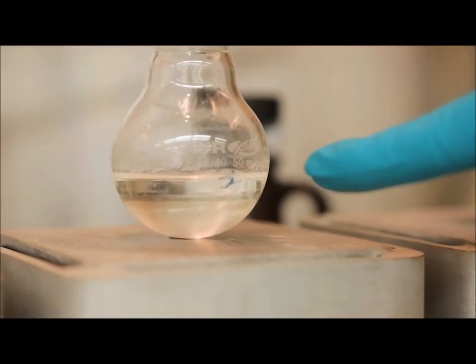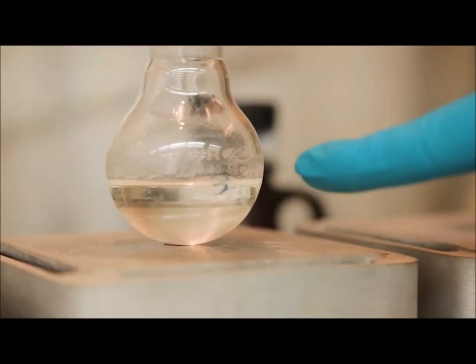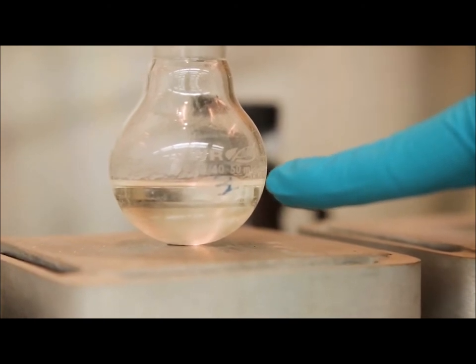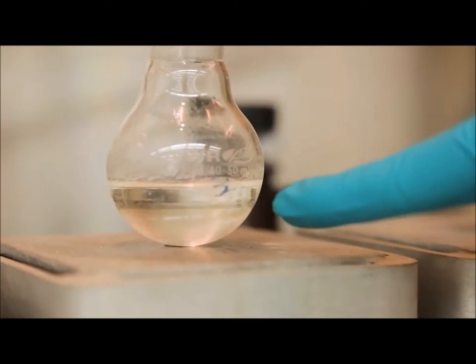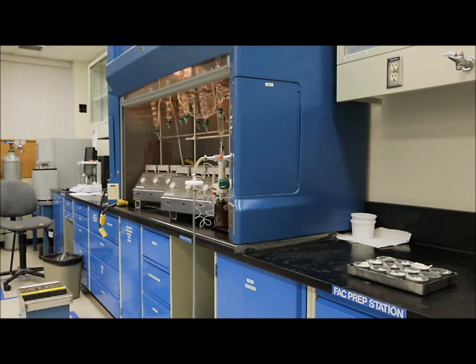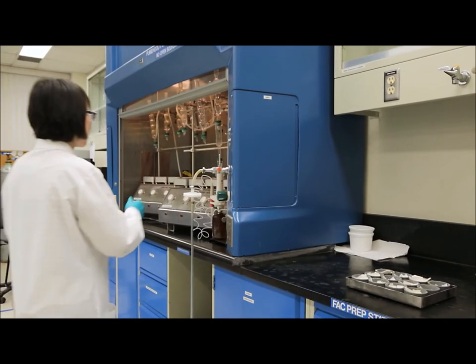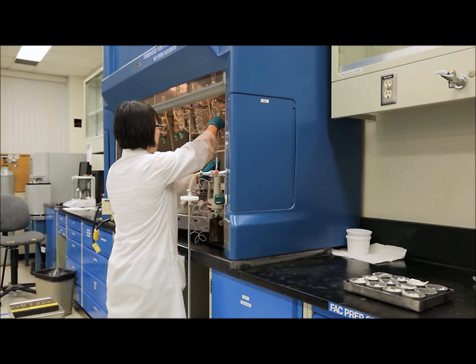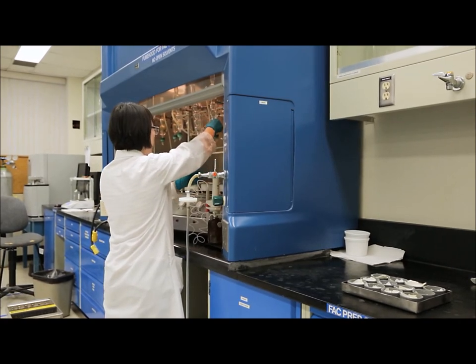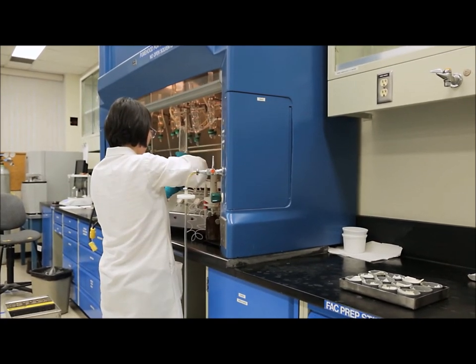Once the sample is cooled, you'll see that the heptane layer has separated out to the top. It is the heptane layer that will contain the extracted fatty acid methyl esters. We can now remove the boiling flask from the apparatus.